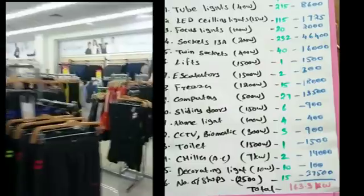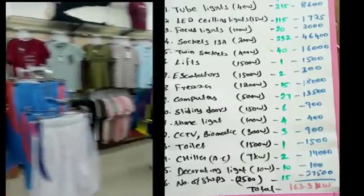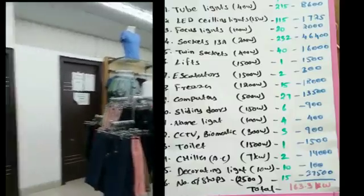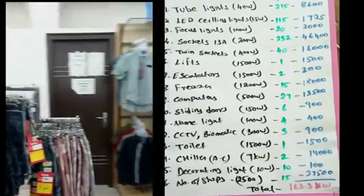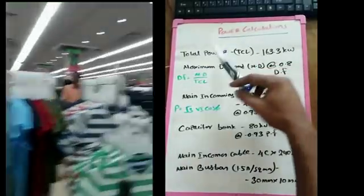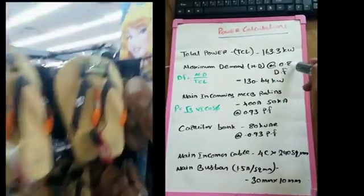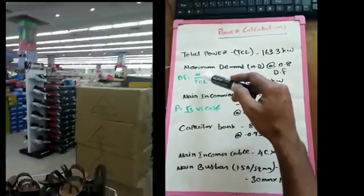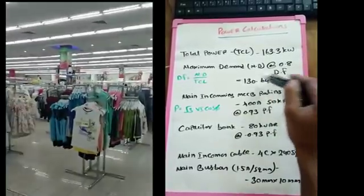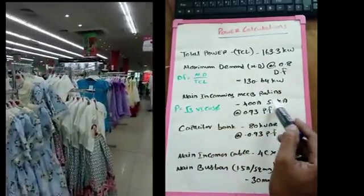There are two chillers - you can see the ground floor and the first floor. Each is 7kW, so this is 14kW total. If you look at all of this, we can see the total power connected is 163.6kW. The maximum demand - with a diversity factor of 0.8 - gives you a maximum demand of 130kW.